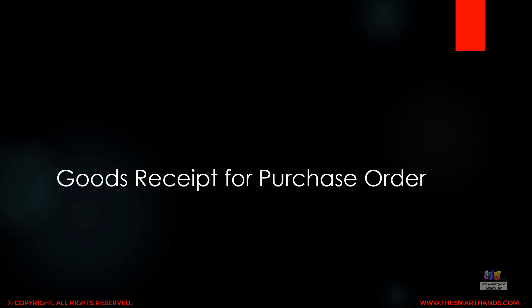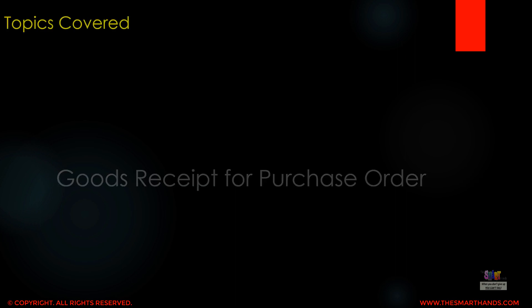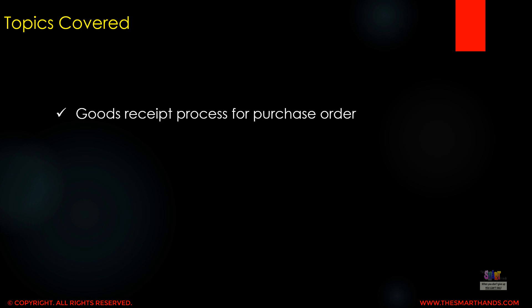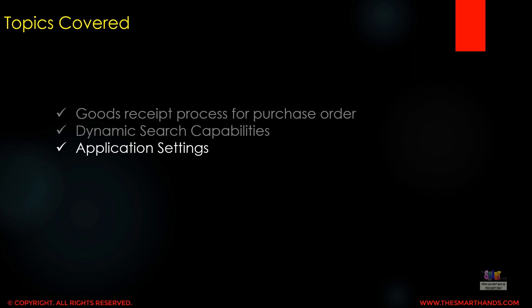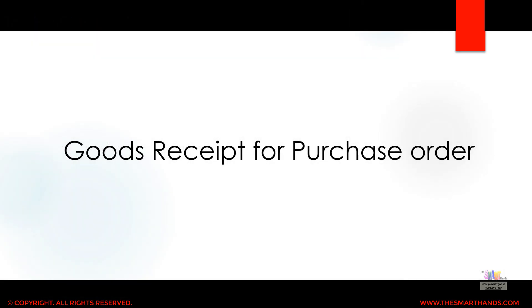Let's start our next topic: goods receipt. We'll go through a couple of different videos where you'll see different types of goods receipt — for example, goods receipt for the purchase order, production order, or without any reference. First we're going to start with goods receipt for the purchase order. The topics we'll be covering are the goods receipt process for purchase order, dynamic search capabilities, and the application settings available for goods receipt. Before we start, let us briefly understand what goods receipt is.